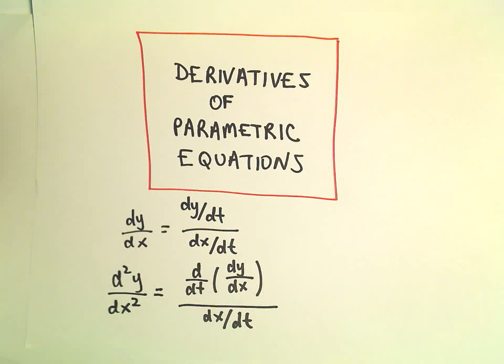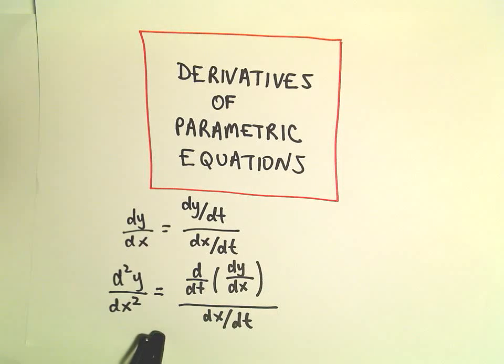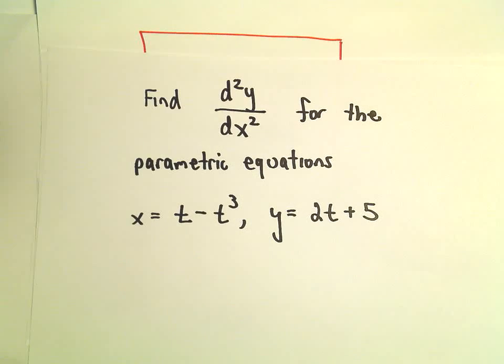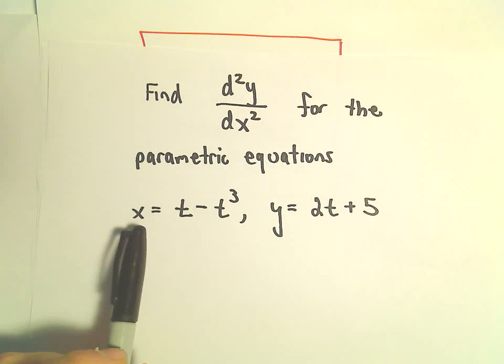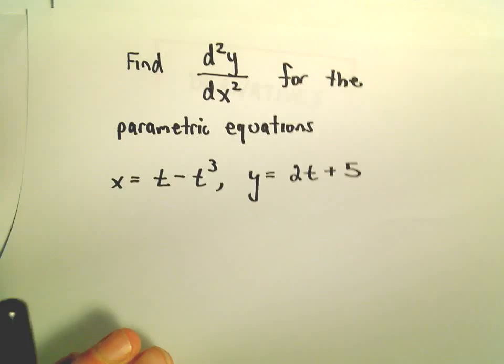Alright, so here we're going to do an example of finding a second derivative, so we'll use the derivative formula at the bottom. So here we're going to find the second derivative for x equals t minus t cubed, and then y equals 2t plus 5.